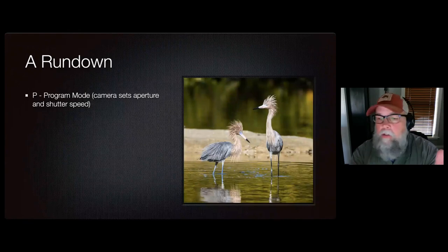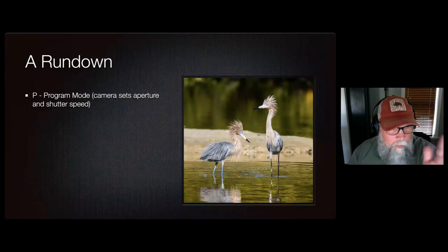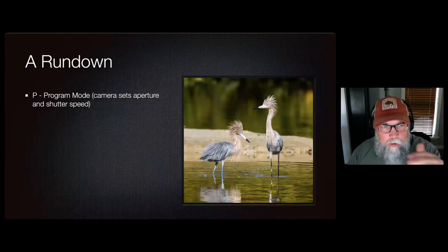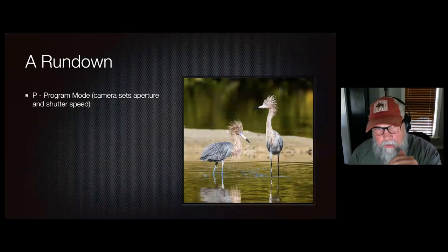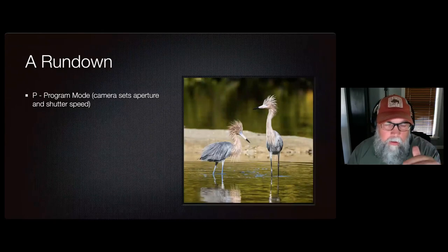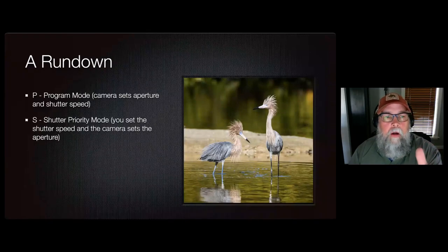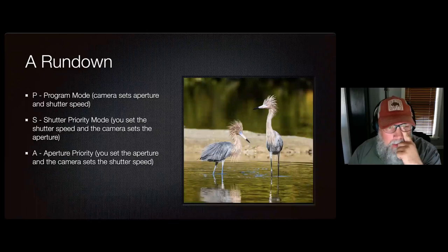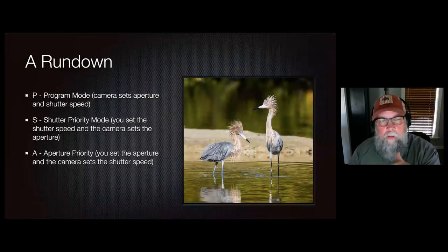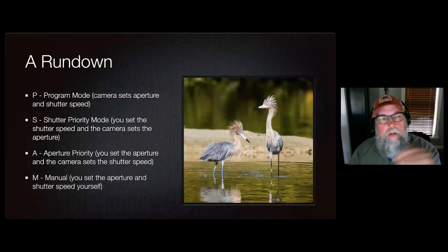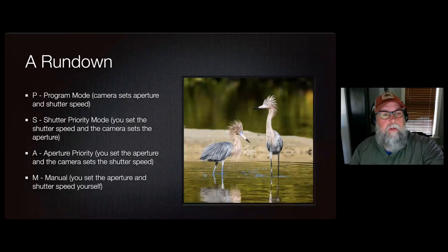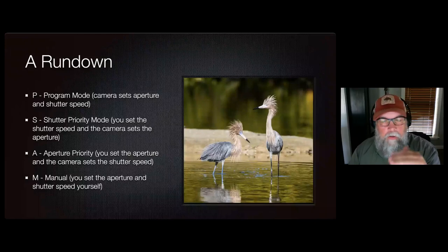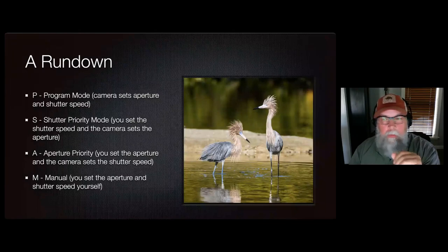A rundown of the various exposure modes: Program mode, or P, is where the camera sets the aperture and shutter speed for you. Shutter priority mode — you set the shutter speed and the camera sets the aperture. Aperture priority mode — you set the aperture and the camera sets the shutter speed. And then manual, where you set both the aperture and the shutter speed yourself. Those are two of the legs of the exposure triangle. The last one is ISO, which I'll be getting to in a bit.